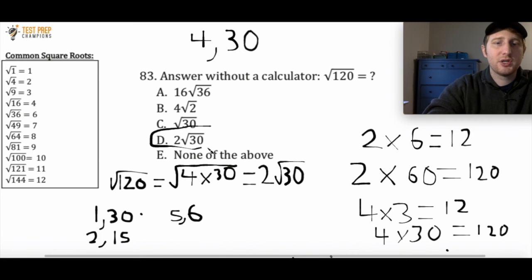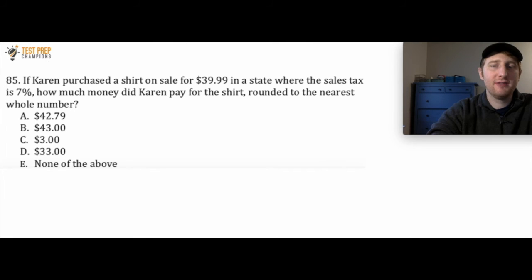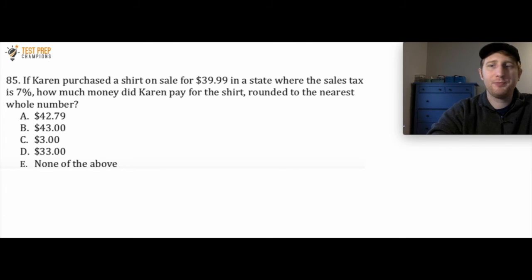Let me show you the written solution — this is kind of hard, so if you got this wrong, don't worry. Hopefully this makes sense and hopefully you learned something. If Karen purchased a shirt on sale for $39.99 in a state where the sales tax is 7%, how much money did Karen pay for the shirt rounded to the nearest whole number? Now it'd be a good time to pause the video, give this one a shot, and then when you're ready, we'll go over how to do it.